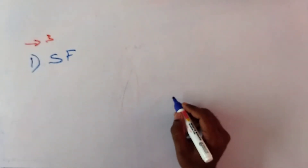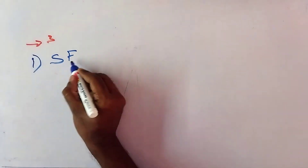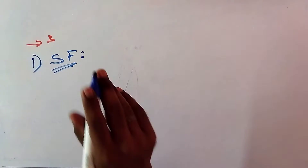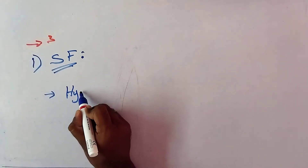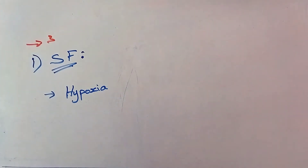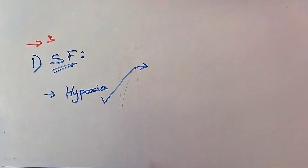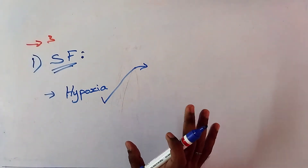Stimulating factors mean that if there is a reduction in RBC in our body, something stimulates the production of RBC. The first condition is hypoxia. Hypoxia is the reduction in oxygen in the tissues. This mostly occurs when we climb to higher mountains. It is the reduced availability of oxygen to the tissues.